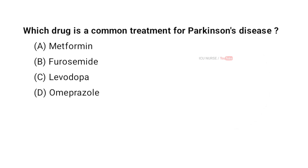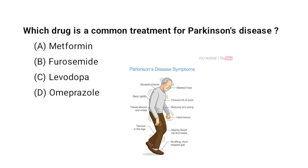Which drug is a common treatment for Parkinson's disease? A. Metformin, B. Furosemide, C. Levodopa, D. Omeprazole. And the correct answer is C. Levodopa.